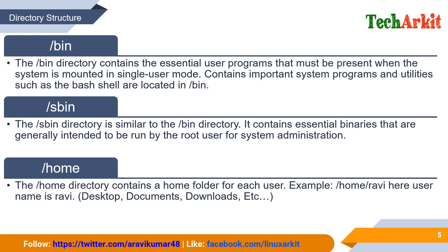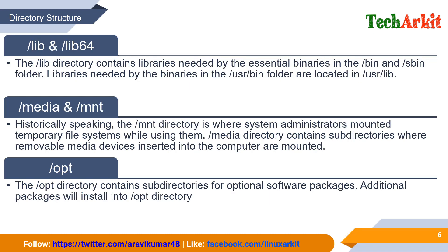The /lib directory contains the libraries needed by the essential binaries in /bin and /sbin. Libraries needed by binaries in /usr/bin are located in /usr/lib. The commands in /bin and /sbin require supporting library files — for example, C code library files — to run in the background. /lib is for 32-bit systems and /lib64 is for 64-bit operating systems.